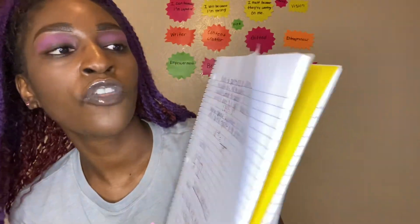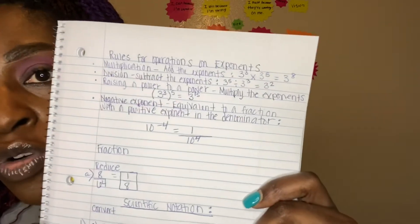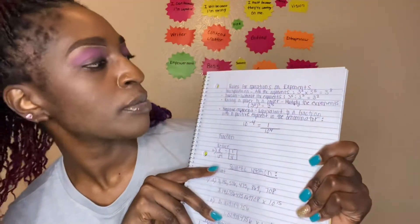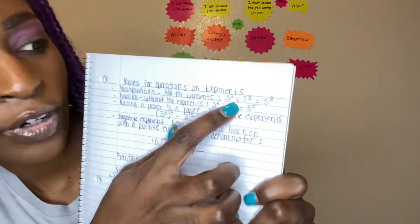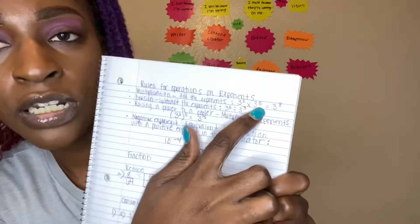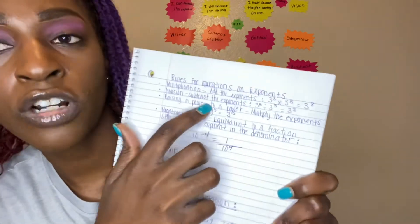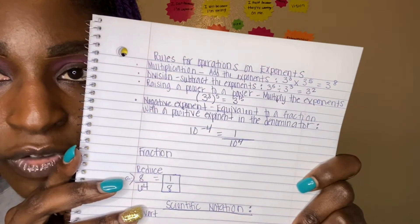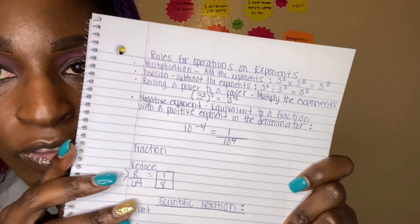Let's get into rules for operations and exponents. When you have a multiplication problem, you're going to add the exponents. So 3 to the 3rd exponent times 3 to the 5th exponent — you add them and get 3 to the 8th. For division, you're going to subtract the exponents. So 3 to the 5th divided by 3 to the 3rd equals 3 to the 2nd, because you subtracted those exponents.